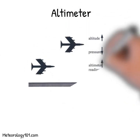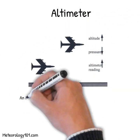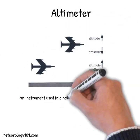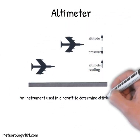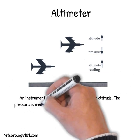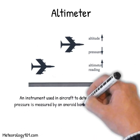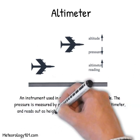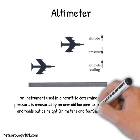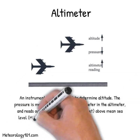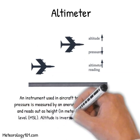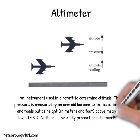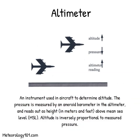An altimeter is an instrument used in aircraft to determine altitude. The pressure is measured by an aneroid barometer in the altimeter, and reads out as height in meters and feet above mean sea level, MSL. Altitude is inversely proportional to measured pressure.